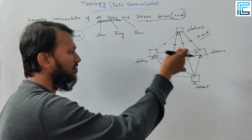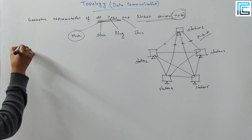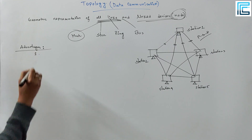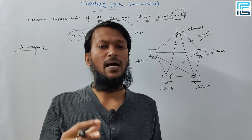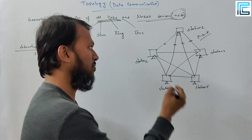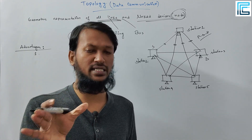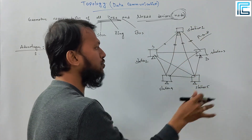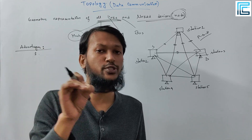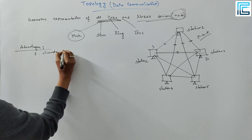The first thing in this topology is data transfer. In mesh topology, a dedicated point-to-point connection exists between the source and the destination. If you have any information about the source and the destination, the dedicated point-to-point connection eliminates the traffic problem.